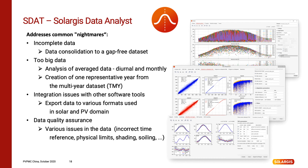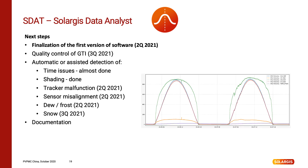It is possible to generate a typical meteorological year and export it in a format for direct use in PV simulation software. There are tools to detect and correct issues: a time reference tool, shading tool and physical limits tool. Our plan is to finish the first version in the second quarter of next year. Together with implementing collected feedback from public testing, development of new automatic or semi-automatic tools will continue. As these tools are finished and tested, they will be smoothly integrated into the existing software package, so the portfolio of SDAT services will constantly grow.